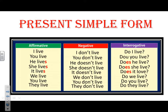The negative form: I use doesn't or don't. Doesn't — with the S — I use with he, she, and it. So: I don't live, you don't live, he doesn't live, she doesn't live, it doesn't live. We put don't or doesn't plus the verb in the infinitive form.